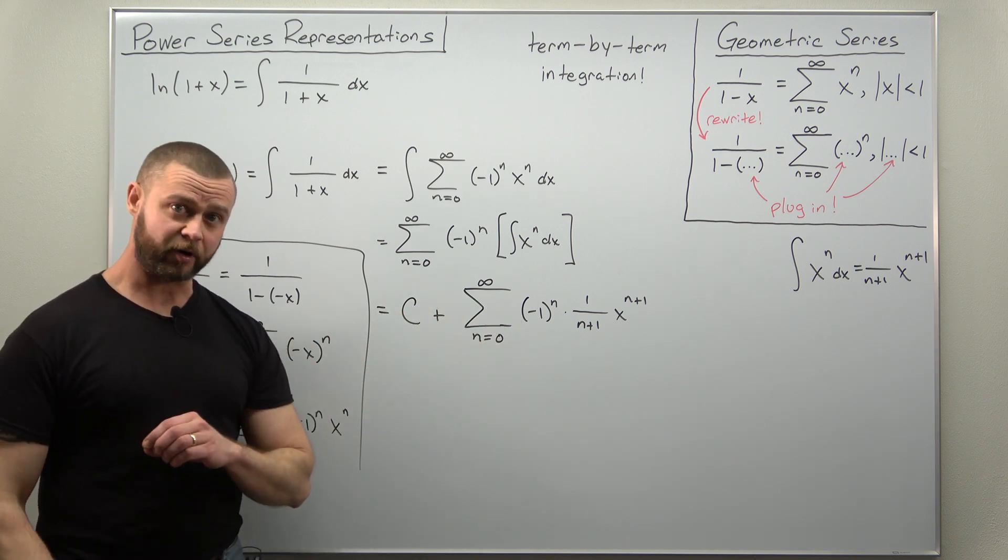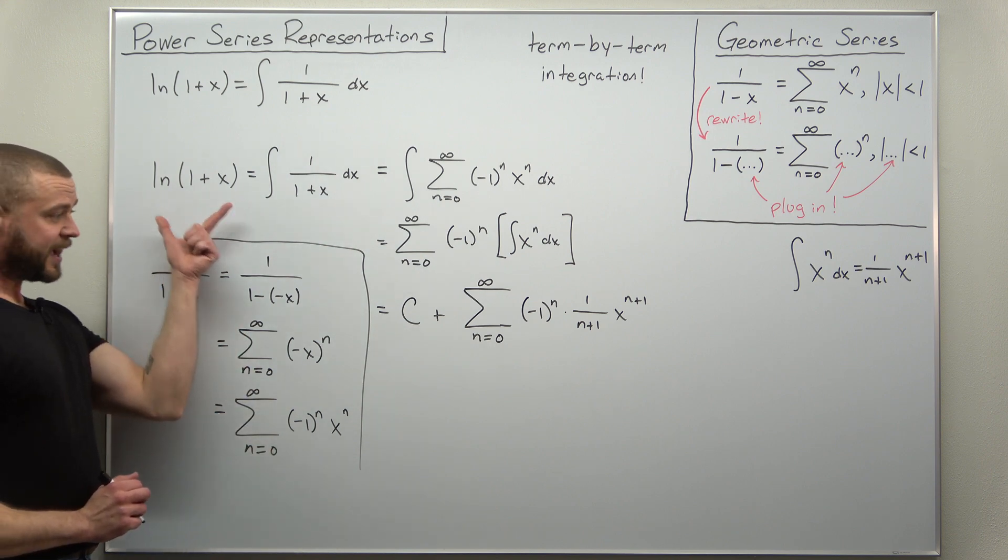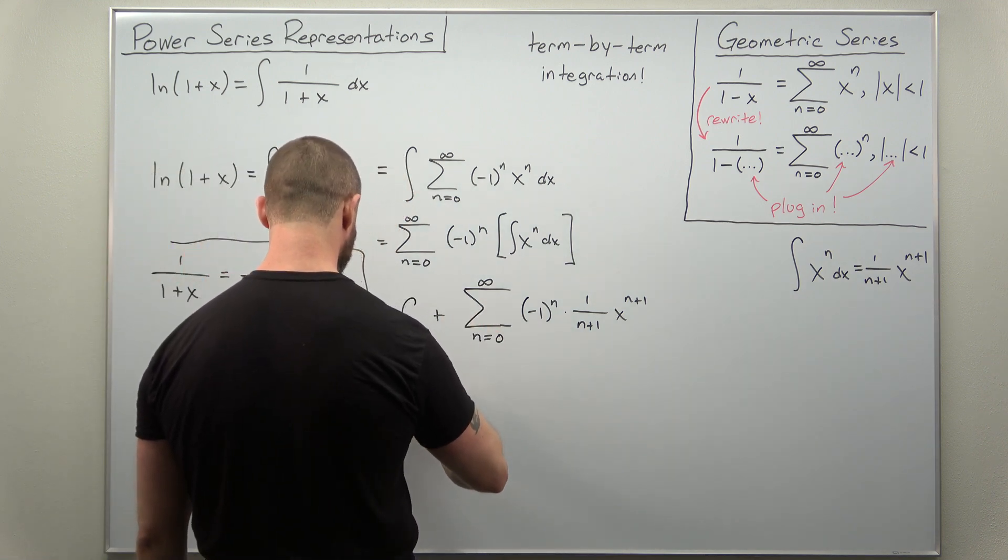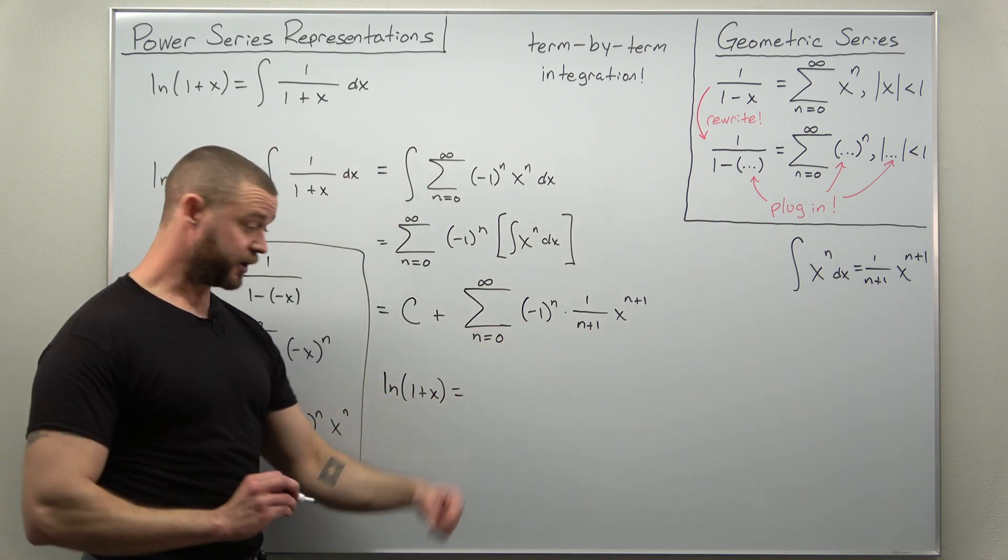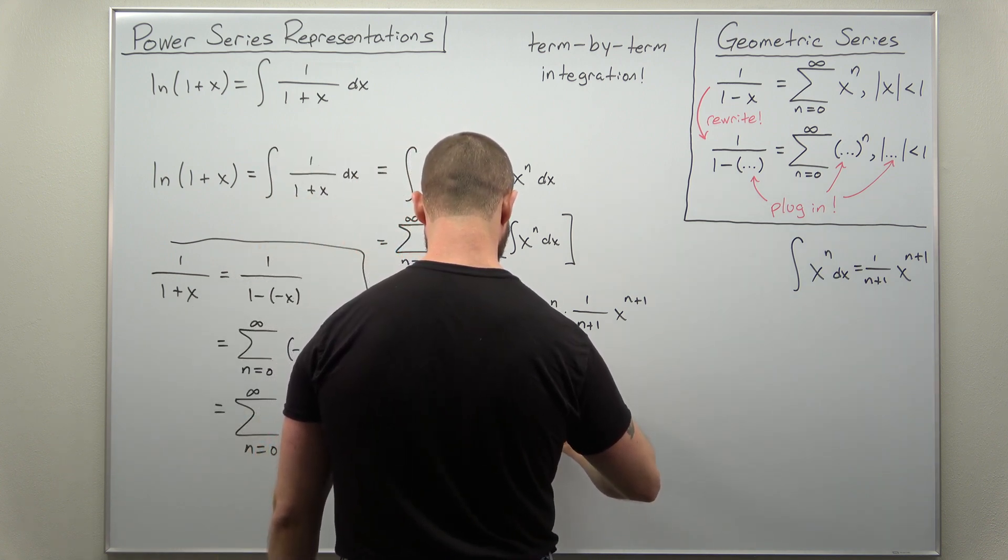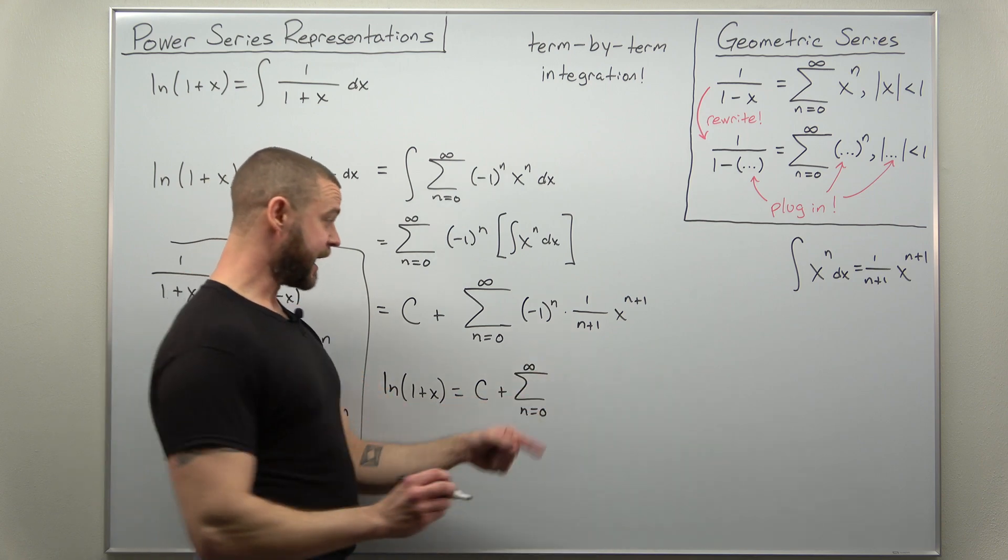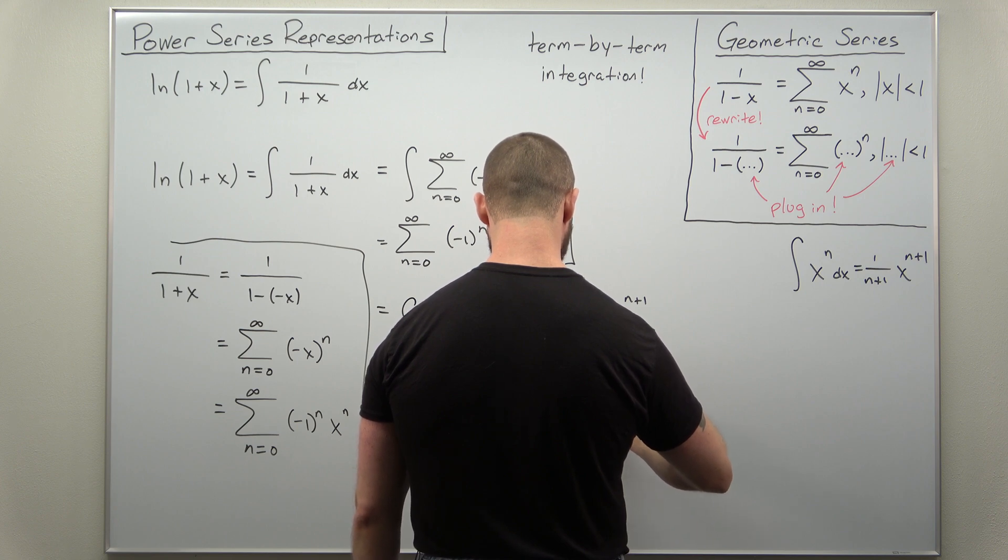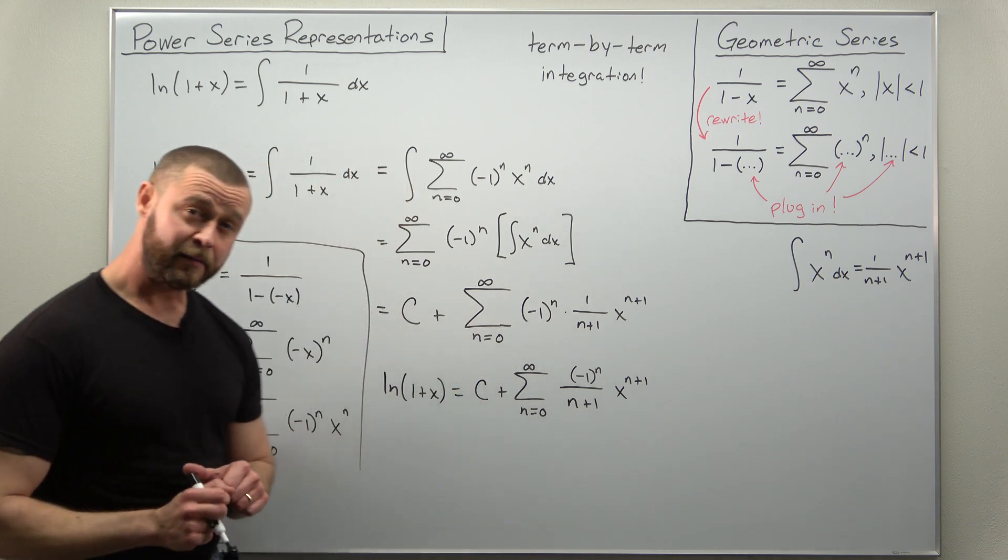Now, we can clean this up a little bit, but let's go ahead first and notice our function natural log of 1 plus x is going to come out to equal this. So let me just write down our function with the power series here. Natural log of 1 plus x has this as its power series representation, a constant c plus the sum from 0 to infinity. I'm going to write those as a single fraction. Negative 1 to the n in the numerator divided by n plus 1 and then times x to the n plus 1.